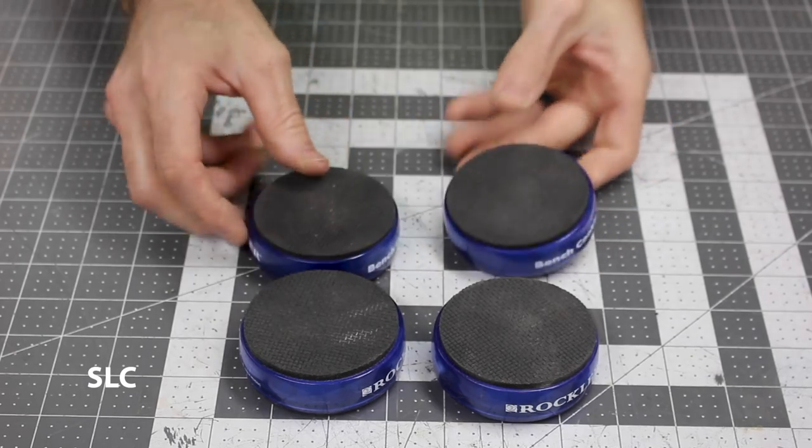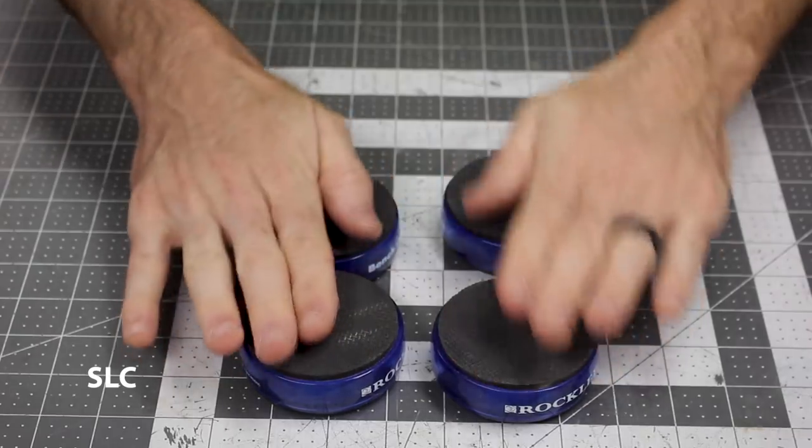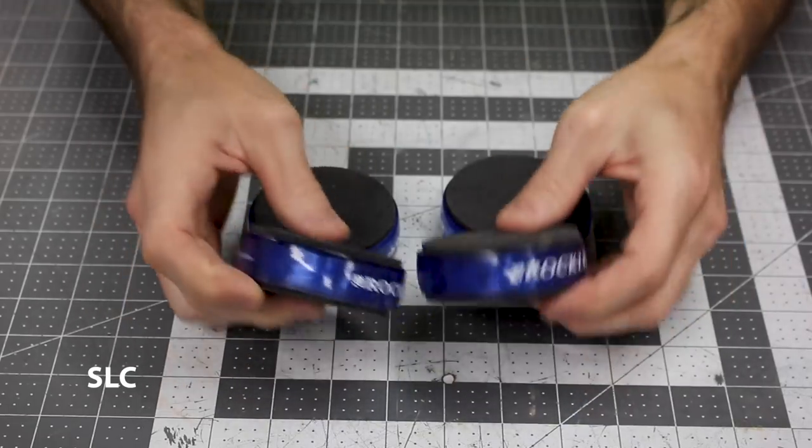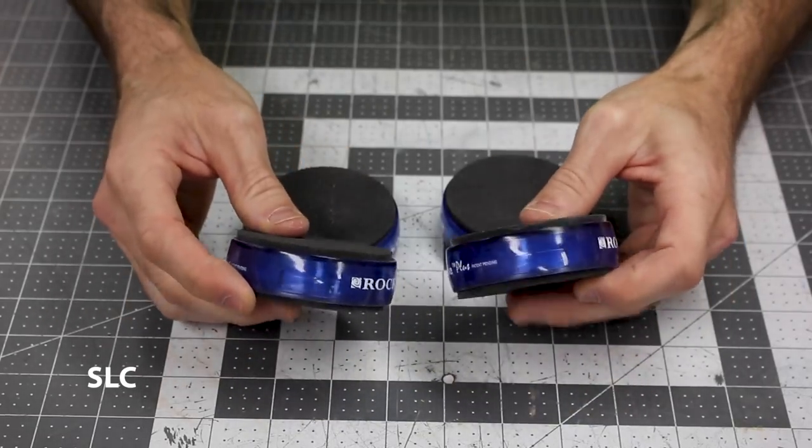Bench cookies are awesome to have, especially when you need to do some sanding. Put your work piece on top, sand it, and it will keep everything nice and sturdy and won't move around. But let's just say you don't have these and you need some. I have a quick way to make some.